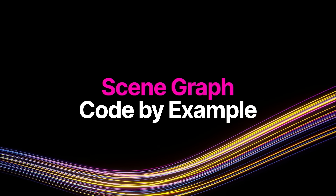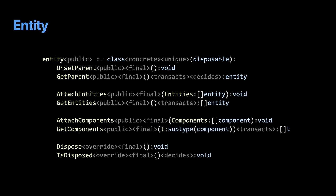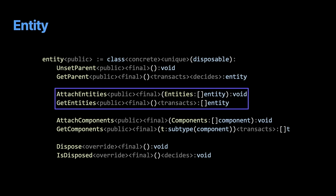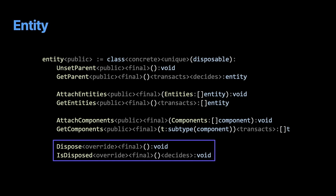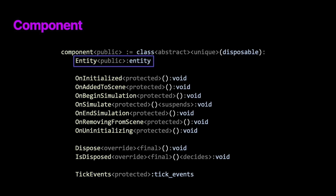Now let's look at this in code. We tried to keep entity and component as simple and clean as possible—generally one function to do any one action. On entity: you can unset parent, get parent, ask questions about the hierarchy, attach new entities as children, read them, attach components, get components, and dispose the entity. For component: it has a pointer to the entity it's placed on, and in Verse pointers cannot be null—this guarantees you can always read the entity you're placed on without null checks. When you set up your component you supply which entity it's going on, and you're there forever.